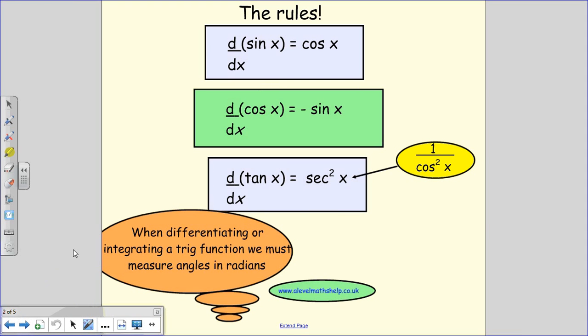First of all we need to be clear about the rules. When you differentiate sine x you get cos x, when you differentiate cos x you get minus sine x, and when you differentiate tan x you get sec squared x. Just remember when you're differentiating or integrating trig functions you must use radians for your angles.